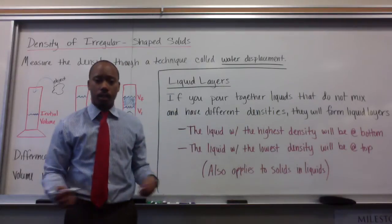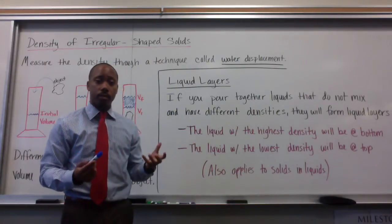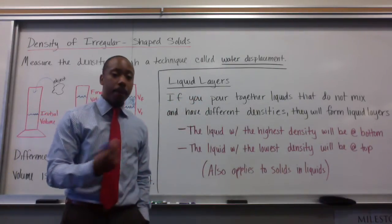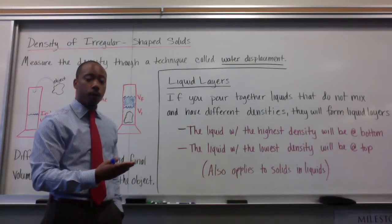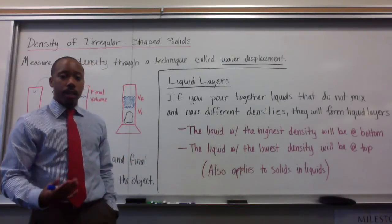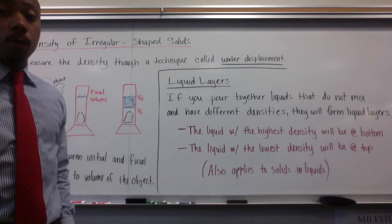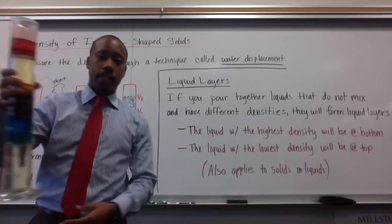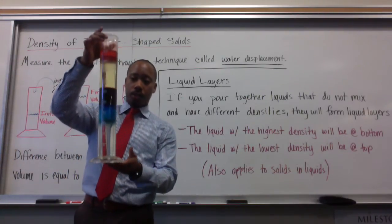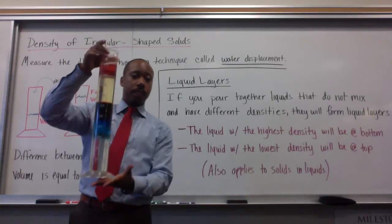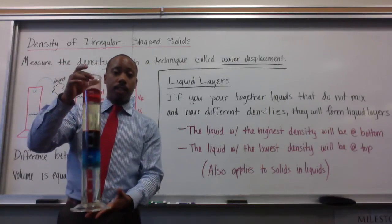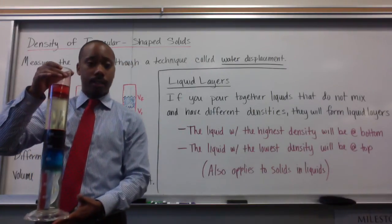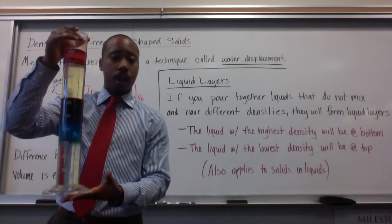Let's talk about when we don't have a solid. We just have differing liquids that are mixing together. Liquid layers. If you pour together liquids that do not mix, and have different densities, they will form liquid layers. The liquid with the highest density will be at the bottom. The liquid with the lowest density will be at the top. This also applies with solids and liquids. Here's an example of liquid layers. These are five different liquids. They're all different substances, thus they all have their own unique densities. Thus, they separate by their densities, when they don't mix together.